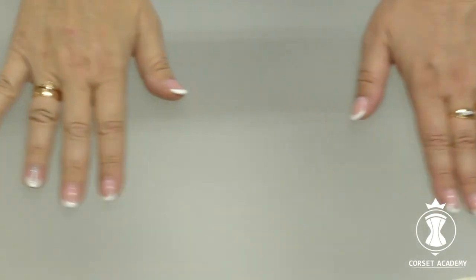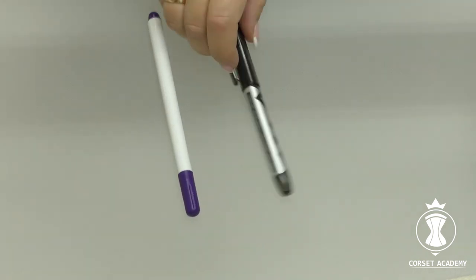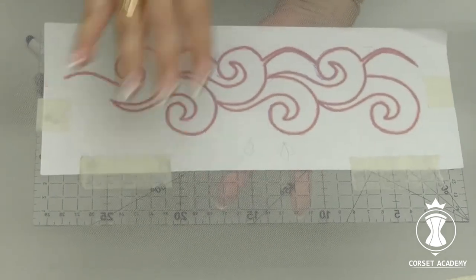The next stage is tracing a drawing on the fabric. The simplest way for transparent or mesh fabric is the following.